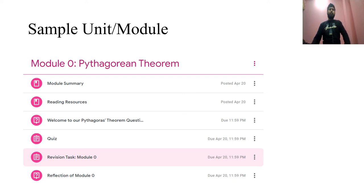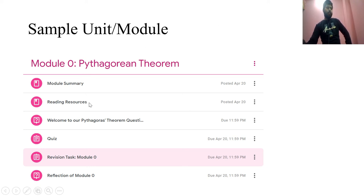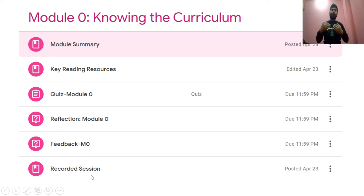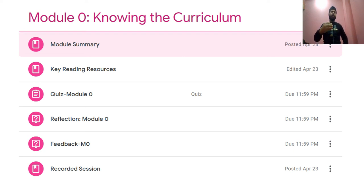Now I want to share some samples. The first sample is Module Zero, on the Pythagorean relation — Pythagoras theorem. It includes a module summary, short summary, reading resources, a welcome question, a quiz, revision tasks, and reflection. Another sample is about knowing the curriculum — module summary, key reading on the curriculum, reflection from module zero, feedback, and a recorded session, so that students can revisit it in their free time and learn at their own pace, in their own time, and in their own way.